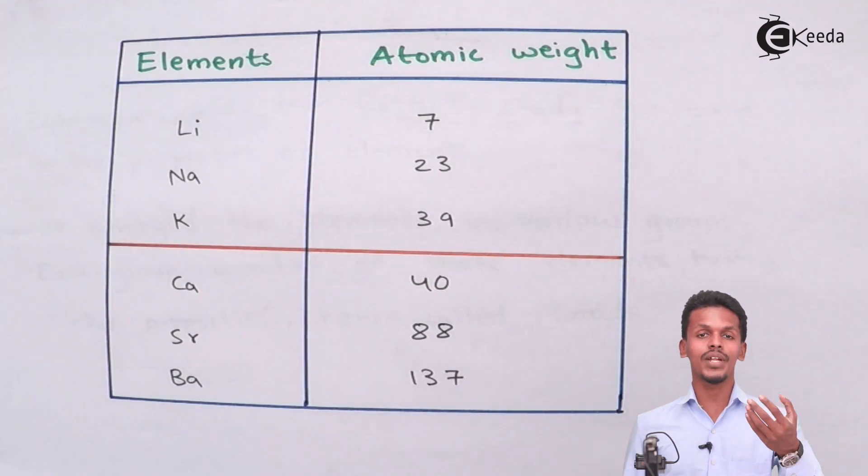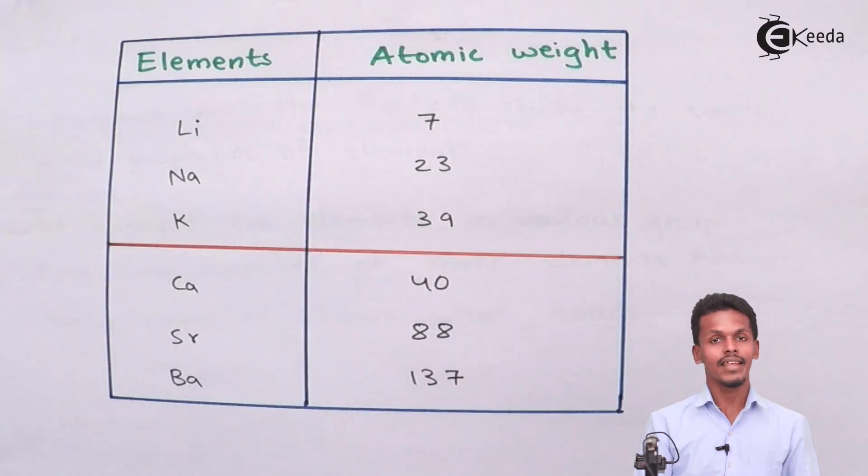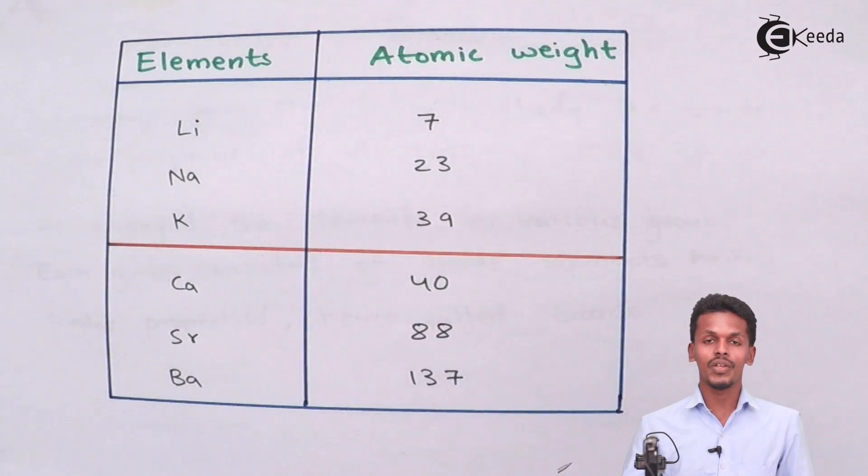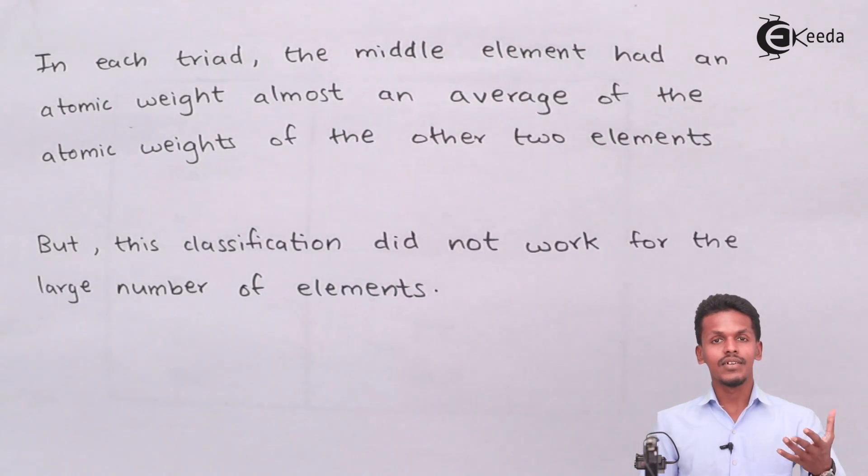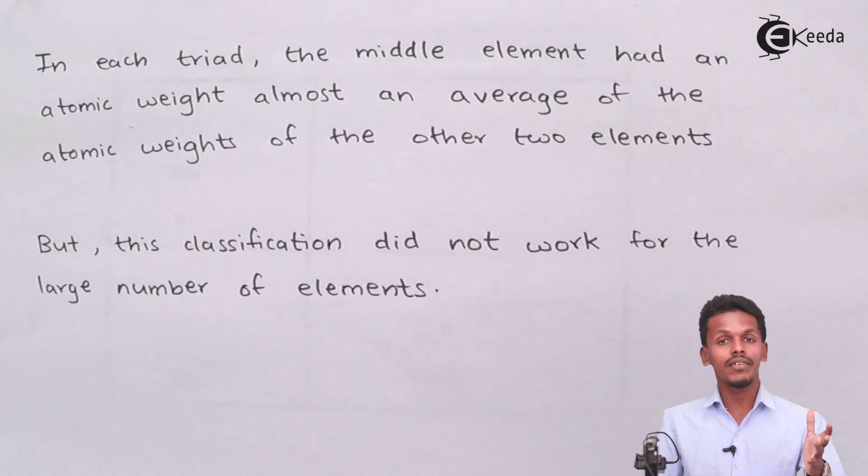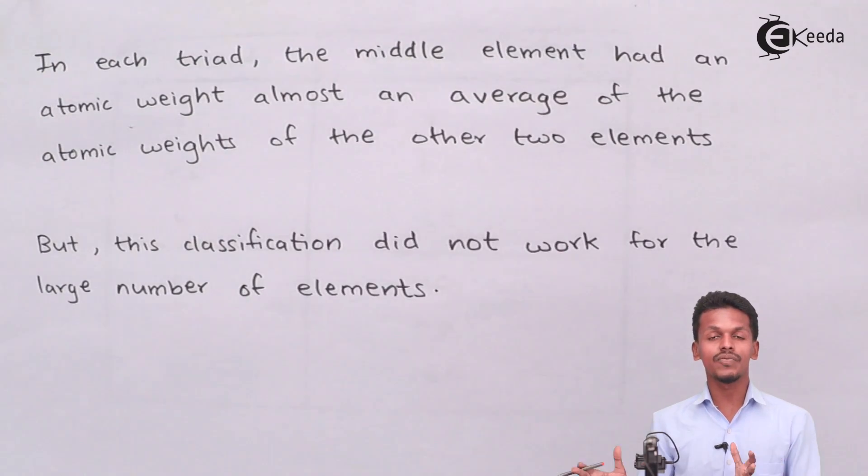There are others also like chlorine, bromine and iodine. Even they had a similar kind of triad. Whenever we calculate the atomic weight of bromine, that was probably the average of the atomic weight of chlorine and iodine. Because of which Dobereiner had played a very great interest in classifying those elements in the periodic table.